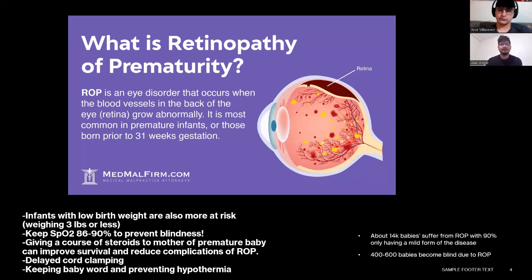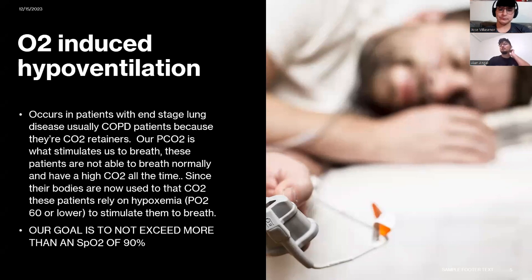All those measures are ways to prevent ROP in premature infants. The steroids help the baby develop a little bit quicker, so when they're born they're not as premature, reducing the chances of getting ROP. Another complication of O2 therapy is O2-induced hypoventilation.